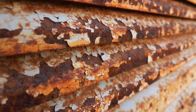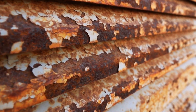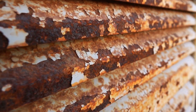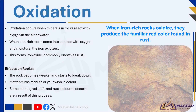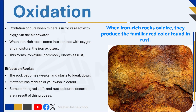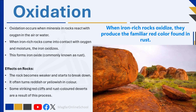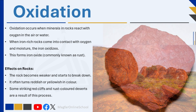Have you ever noticed how iron rusts when it's exposed to water and air? A similar process happens in rocks containing iron. Oxidation occurs when minerals in rocks react with oxygen in the air or water. When rocks containing iron minerals come into contact with oxygen and moisture, the iron oxidizes and forms rust or iron oxide. This reaction weakens and breaks down the rock, often giving it a reddish or yellowish color.